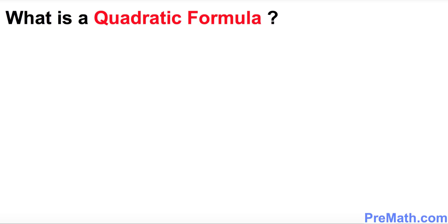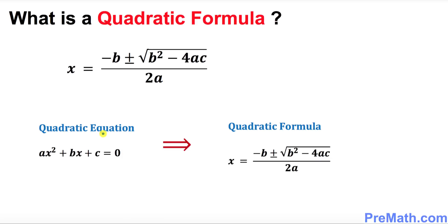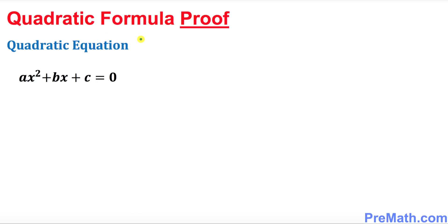Hello again everyone. In this video tutorial we will be talking about the quadratic formula. My very first question is: what is the quadratic formula and how does it look? Well, this is our quadratic formula. Now my next question is how did we come up with this solution? Where did it come from? How can we prove from the quadratic equation ax squared plus bx plus c equals zero to get this quadratic formula? Now I'm going to show you how to prove this, so let's get started with our proof.